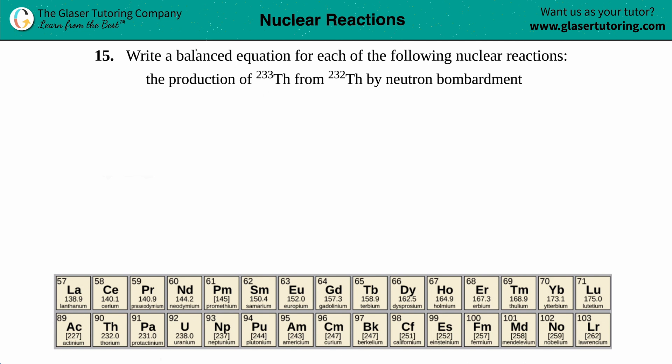Number 15: Write a balanced equation for each of the following nuclear reactions: the production of Th-233 from Th-232 by neutron bombardment. Let's get started. We're going to be dealing with a balanced nuclear reaction.